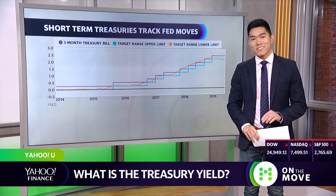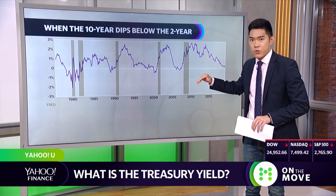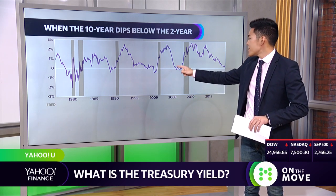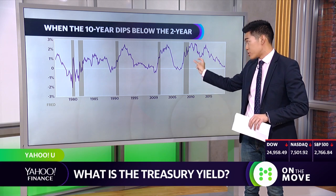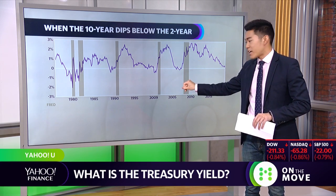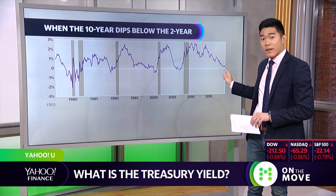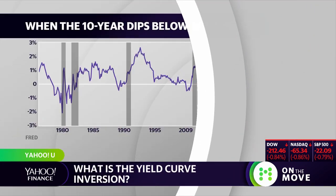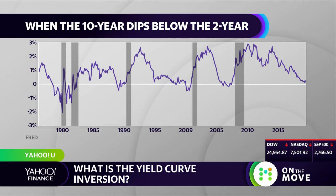Why do people care so much about the yield curve? It has to do with recessions. The spread between the 10-year and the 2-year — the most liquid Treasuries — is a key indicator. When that spread dips negative, meaning the 10-year falls below the 2-year, it has historically preceded a recession, as seen before the 2008 financial crisis and before the 1990s recessions. Right now we're getting very close, but it hasn't tipped negative yet. It's worth noting the inversion has also called recession twice when it didn't happen, so it's not a perfect indicator — but it's one people are paying very close attention to as concerns about a potential recession grow.